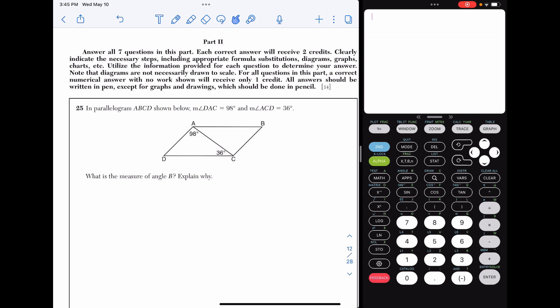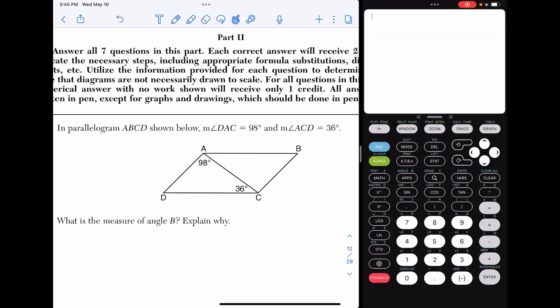Alright, 25. In parallelogram ABCD shown below, we have angle DAC is 98 degrees and ACD is 36 degrees. We're looking to figure out what the measure of angle B is. When you are looking at any problem where you're trying to find angle measurements, don't worry if you can't find angle B in one step. Sometimes you have to do something first in order to work your way there. So what I'm going to do first is I see that I have a triangle here and that every triangle has a sum, an interior angle sum of 180. So that makes this angle 46.